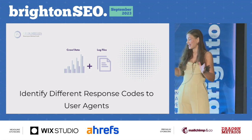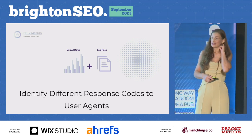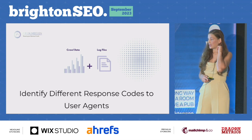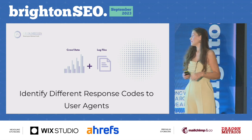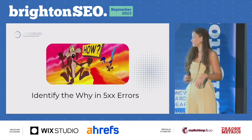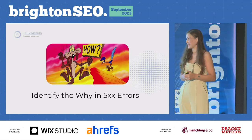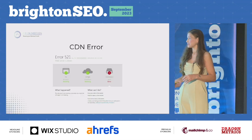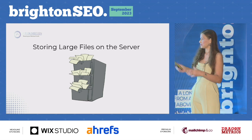One important thing is identifying different response codes to user agents. It's really important if your user agents, like Google, are getting a different response code than when you're crawling your site with something like Screaming Frog. You can also look at why there are 500 errors on site — log file analysis can tell you whether it's a CDN error, a particularly large file causing the problem, or, if you're lucky, really high traffic.